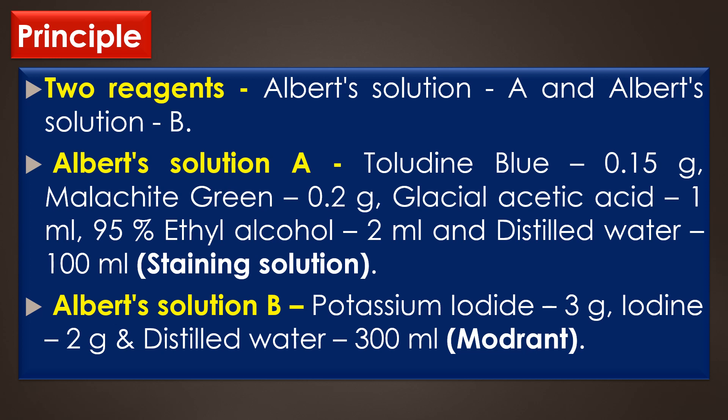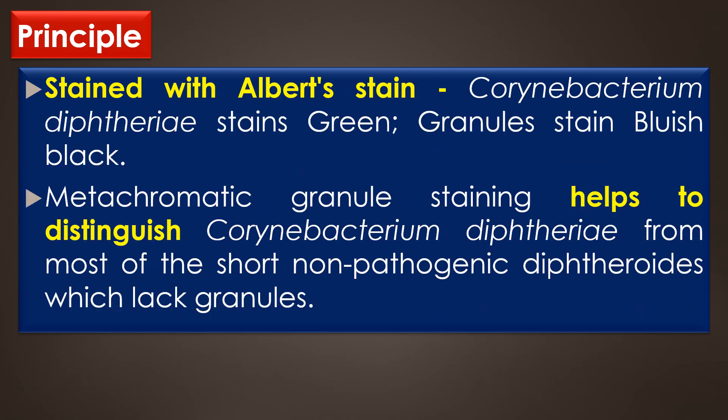The second solution is Albert solution B. It contains iodine and potassium iodide in water. Albert solution B acts as a mordant, that is an element that binds and holds a chemical dye to make it stick on the bacteria. When stained with the Albert stains, Corynebacterium diphtheriae stains green, whereas the granules stain bluish black.